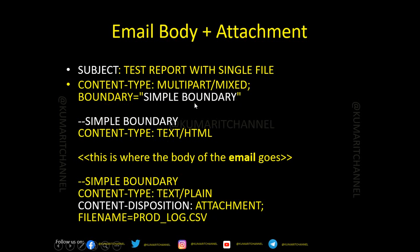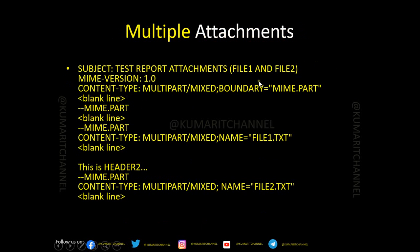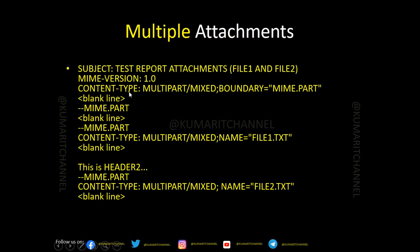The boundary value is user-defined text — you can use anything. For multiple attachments, you define each file with its own boundary section. For example, for file1.txt and file2.csv, you use the boundary name (like 'mypart') to separate each section. Each file gets its own boundary block prefixed with '--'. If you have three files, you get three separate boundary sections. Just make sure the email does not exceed 10 MB, or delivery may fail.